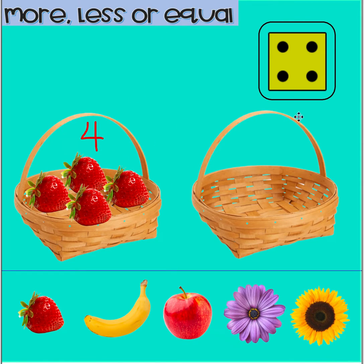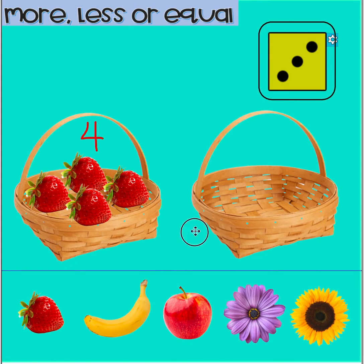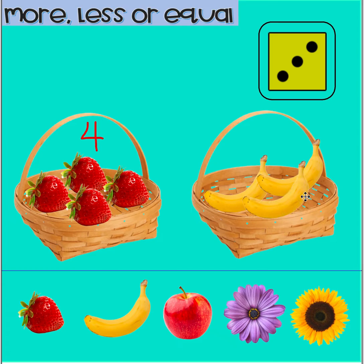Now let's roll another dice to find out how many bananas we need to put in the other basket. How many can you see now? Three! So we need to put three bananas in this basket. Count with me: one, two, three. Three bananas.